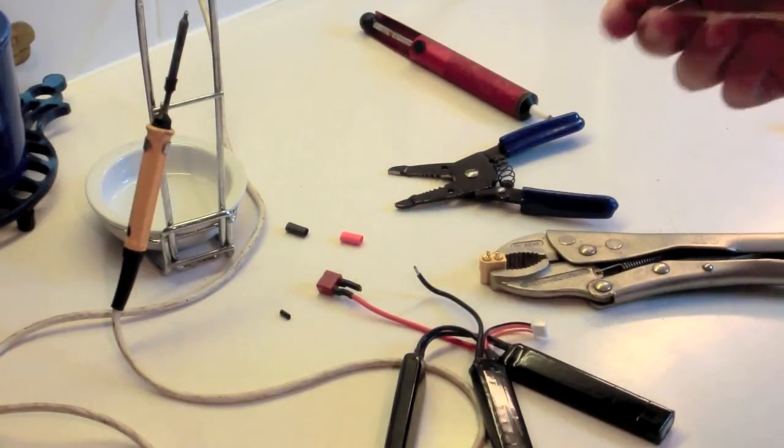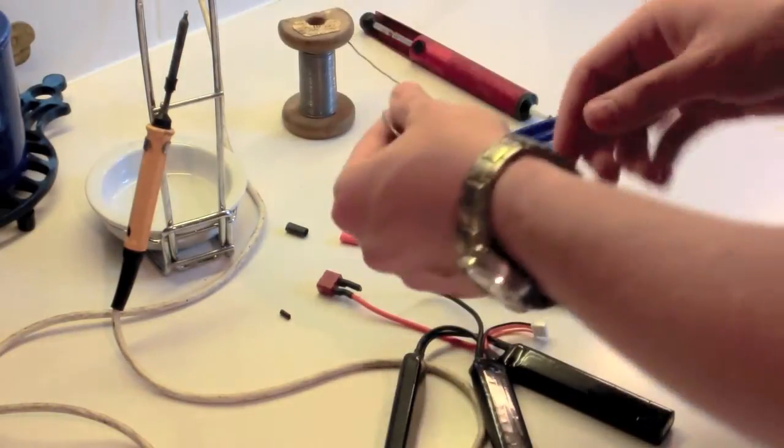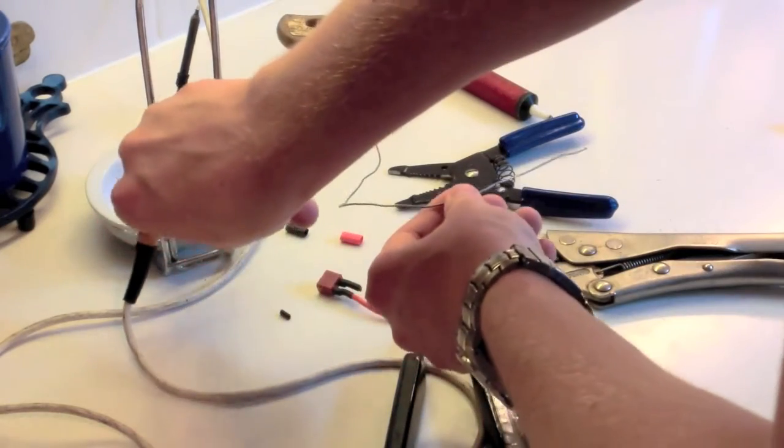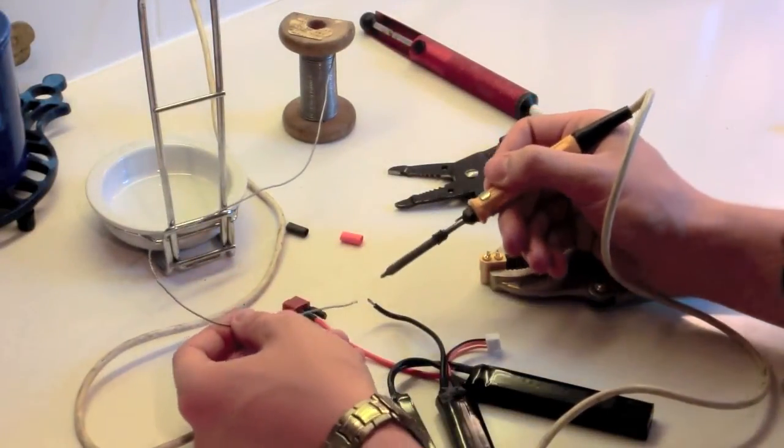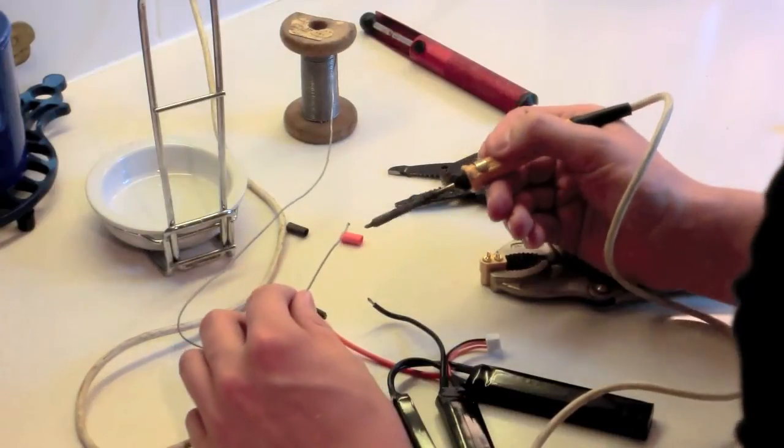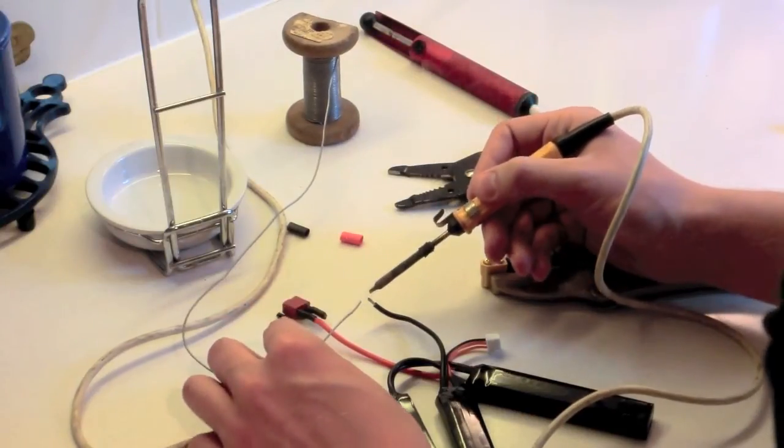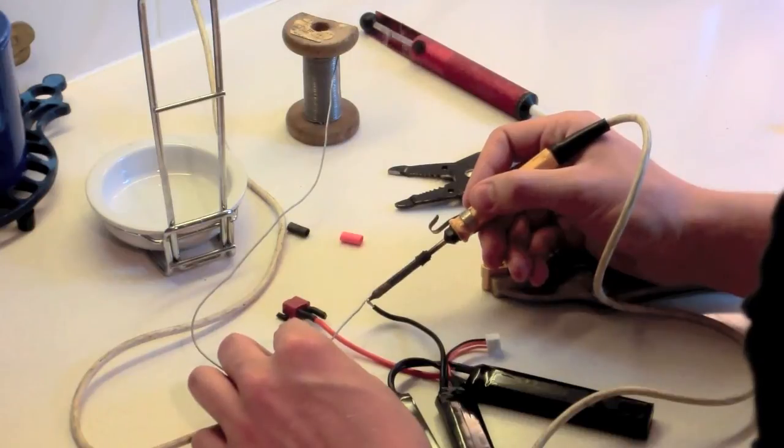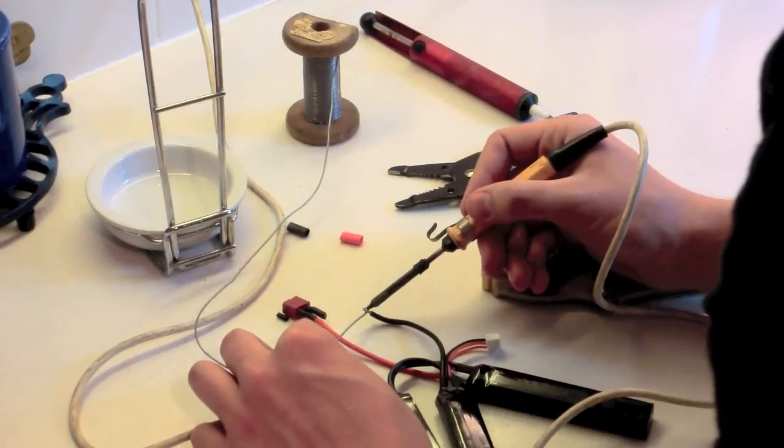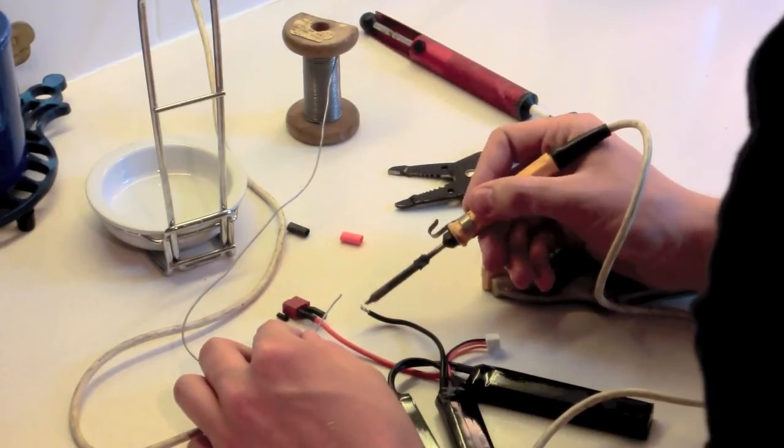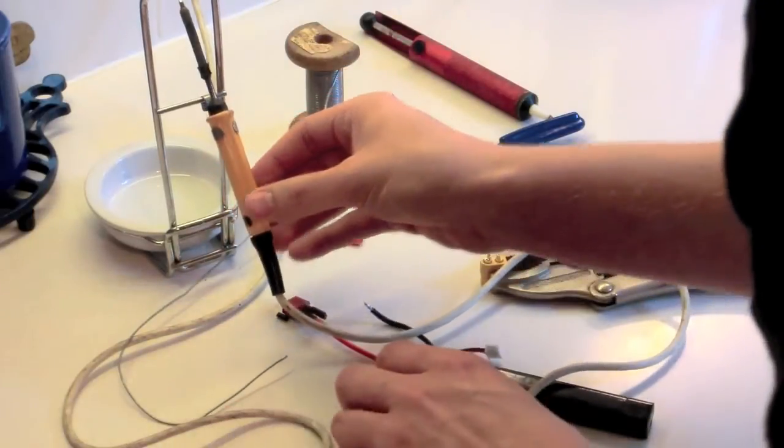Right then. I prefer lead-based solder because I think it generally has a lower melting point. Right. Make sure the soldering iron is nice and hot and then proceed with soldering that up. So a good thing to do is just to put a little bit of solder on the end of that soldering iron. It just helps with the heat transfer.